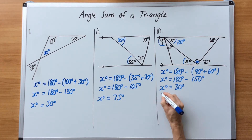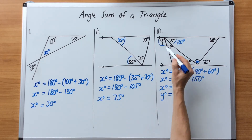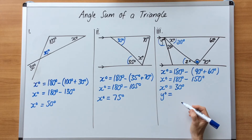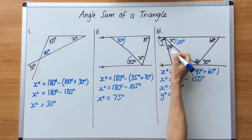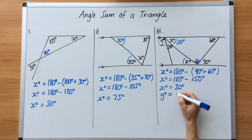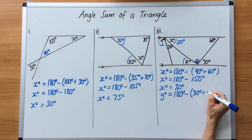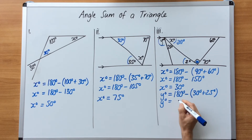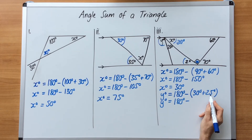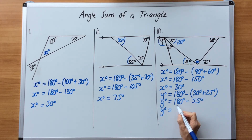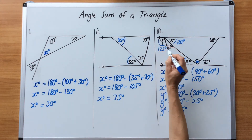Now I can solve y. y degrees equals — and we've got a supplementary angles situation here, like an upside-down supplementary angle. Supplementary angles equal 180 degrees, and I have 30 degrees and 25 degrees, so I can figure out the unknown y. 180 degrees minus what I know — 30 and 25 — I must add those up: the sum of these two angles is 55. y degrees equals 180 minus 55, which is 125. So this angle is 125 degrees.